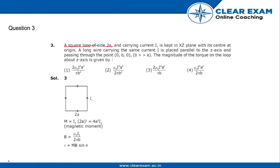A square loop of side 2A and carrying current I is kept in XZ plane with its center at origin. A long wire carrying the same current I is placed parallel to the Z axis and passing through the point (0, b, 0) where b is much greater than A. The magnitude of torque on the loop about Z axis is calculated.